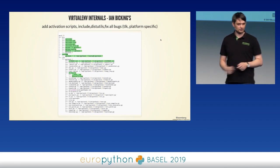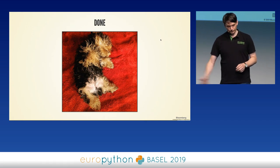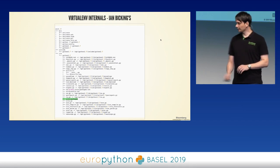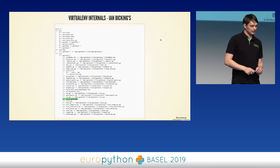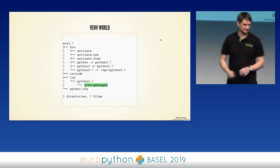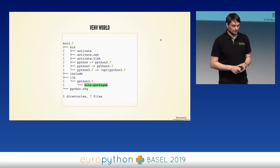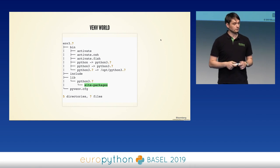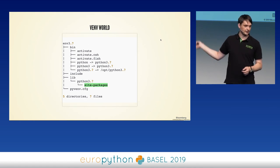The only thing we actually care about in the virtual environment is that lonely site-packages folder — everything else is just there to make things work. By comparison, venv's directory tree looks a lot slimmer. The reason venv can get away with a much smaller structure is because the interpreter itself knows about virtual environments and can load configuration from pyvenv.cfg directly.